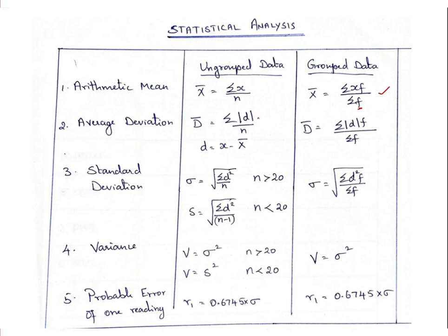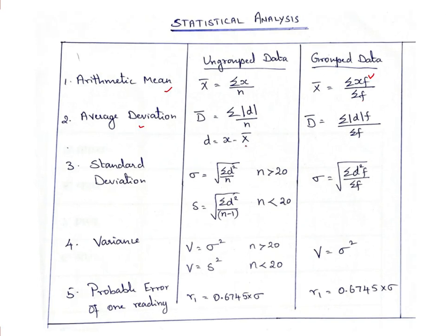Then average deviation: D̄ is equal to summation of modulus of D divided by n. We are going to use all these formulas. From each reading, we have to calculate x minus x̄, where x̄ is the arithmetic mean calculated from the first formula.